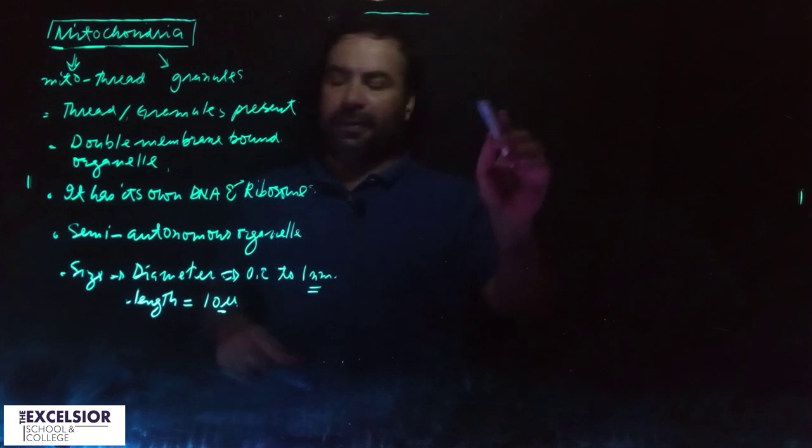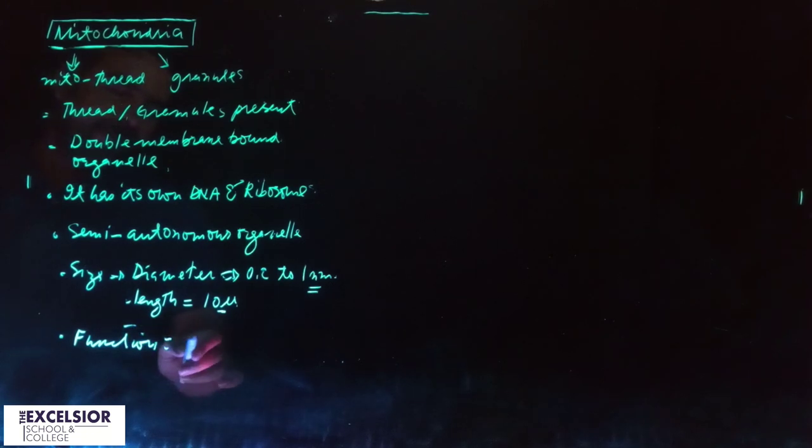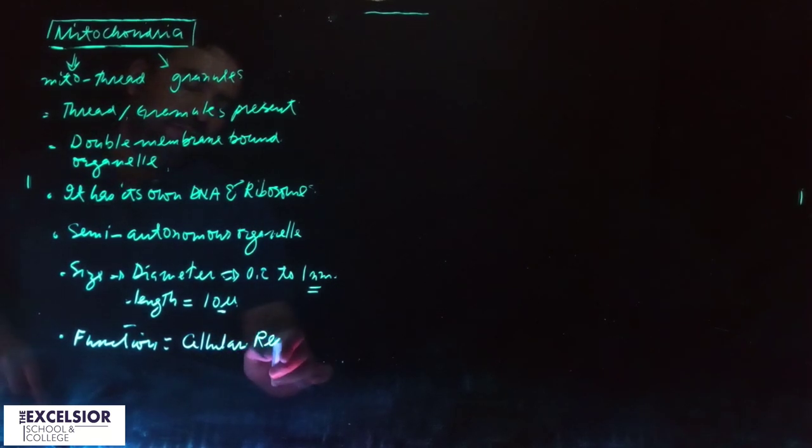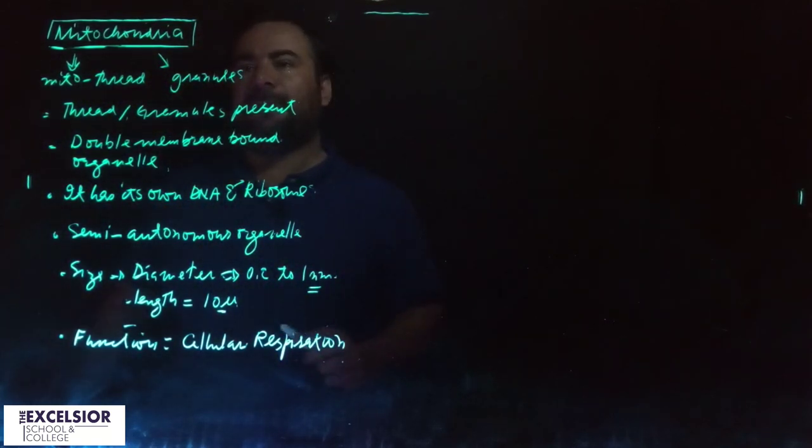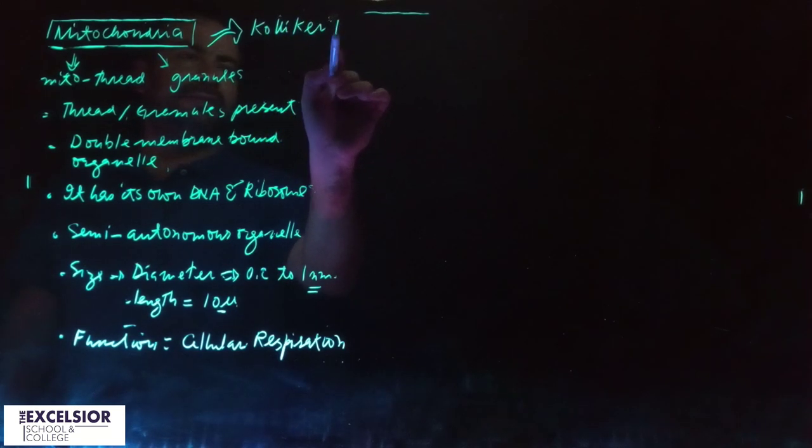Now let's go in the detail of that function. What is the function that these organelles are supposed to perform? The function is called cellular respiration. This organelle was discovered by a scientist named Kolliker in 1857.